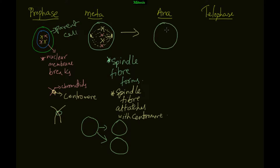In anaphase, the spindle fiber shortens and pulls the chromosomes to the two ends. There is a force from both sides pulling the chromatids towards the poles. You can see the yellow chromatid separates because of this pulling force.